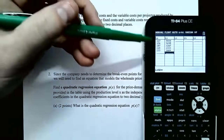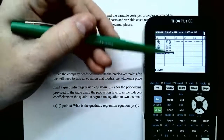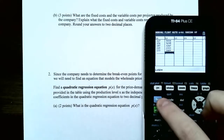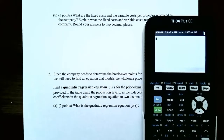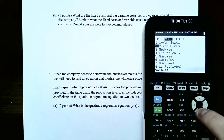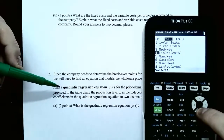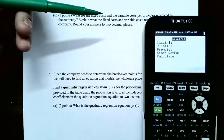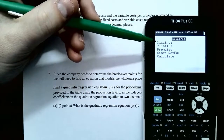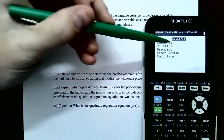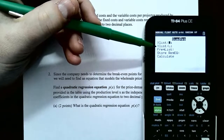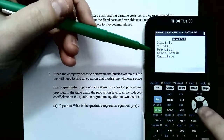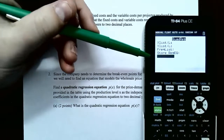Once you have the production levels in List 1 and the wholesale prices in List 2, go to 2nd, Quit to get to the home screen. Go to STAT for regression, scroll over to Calc again. But this time we don't want number 4 for linear regression — we want number 5, the quadratic regression. Make sure the screen is correct: x values are in List 1, y values — the wholesale price — are in List 2. Scroll down and calculate, or just hit Enter.